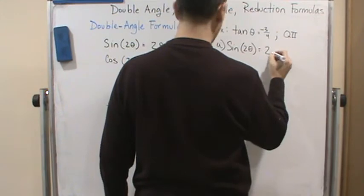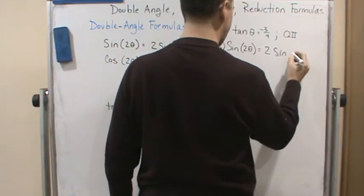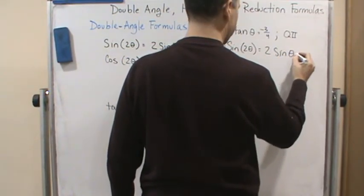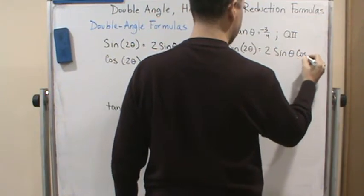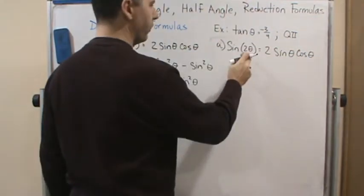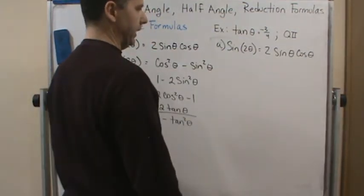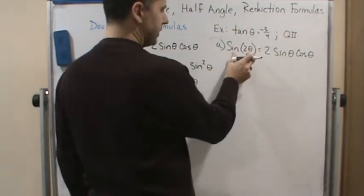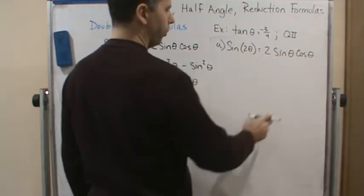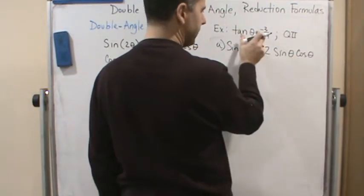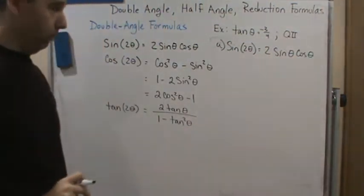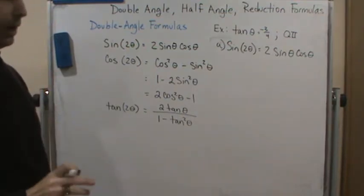That's going to equal two sine theta cosine theta. Why? Because we don't have a double angle here. We have tangent of theta, and they want sine of two theta. Well, we're going to use this identity to help us figure that out. And it's going to be really helpful.